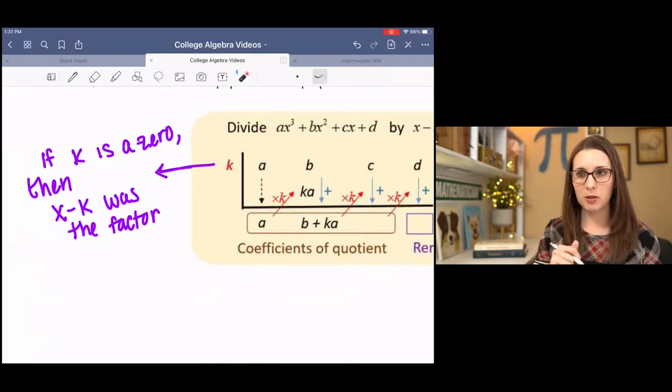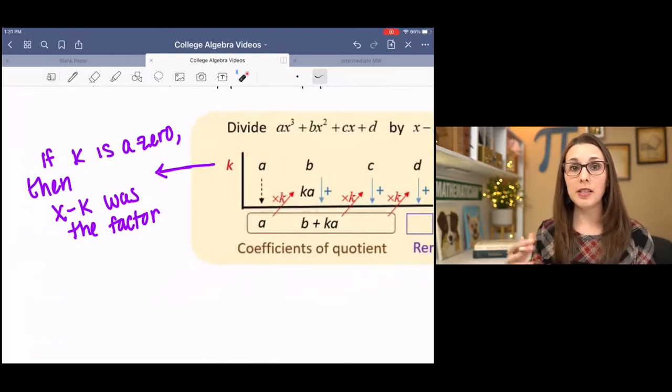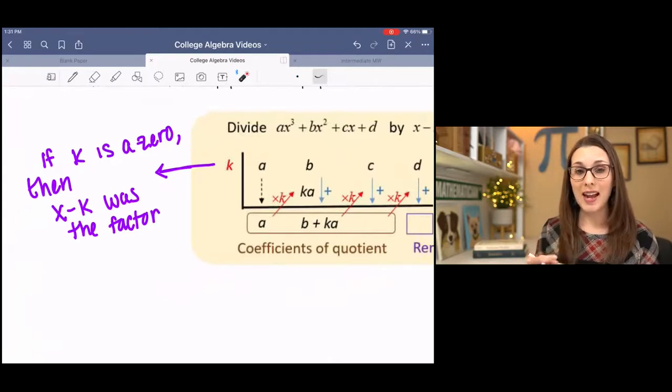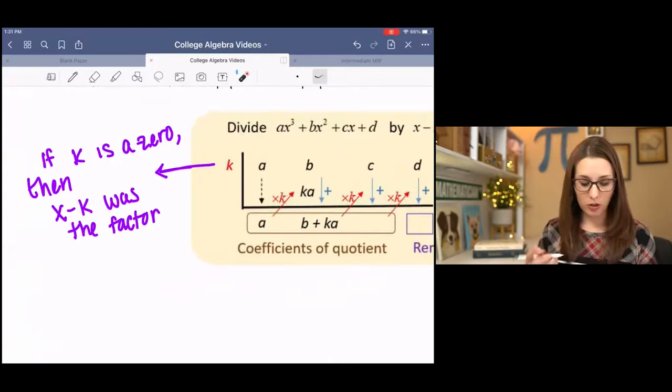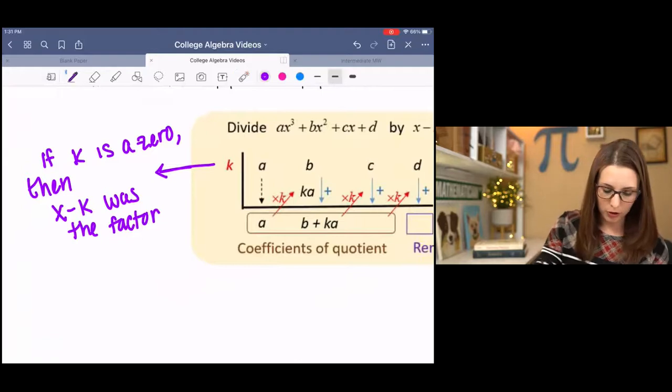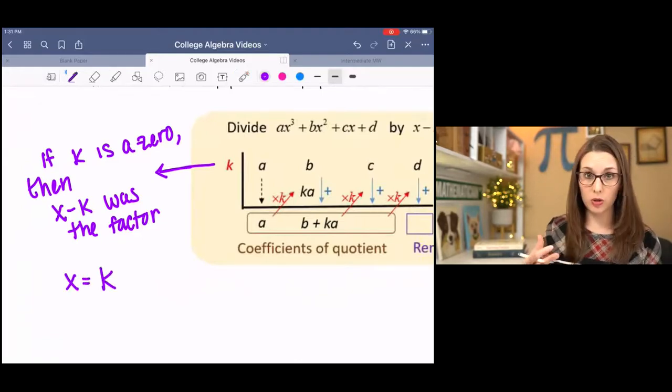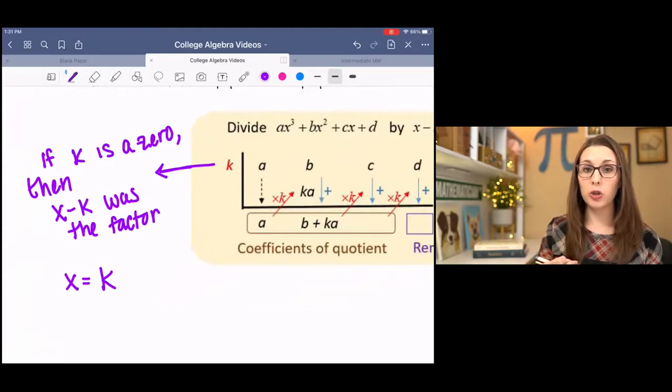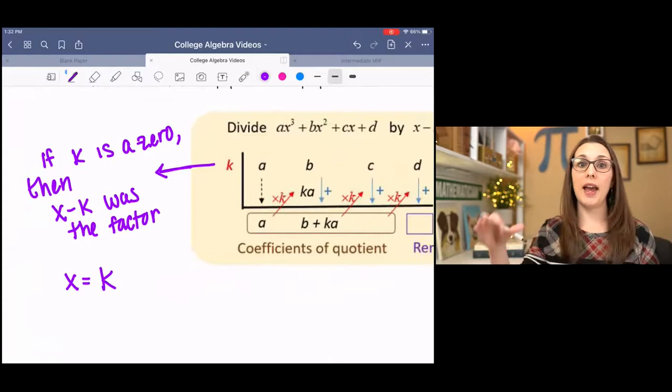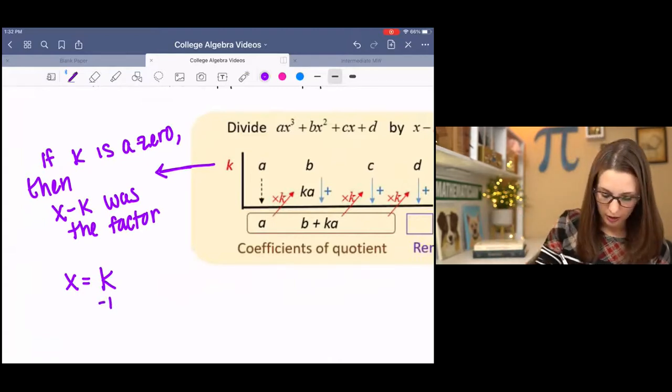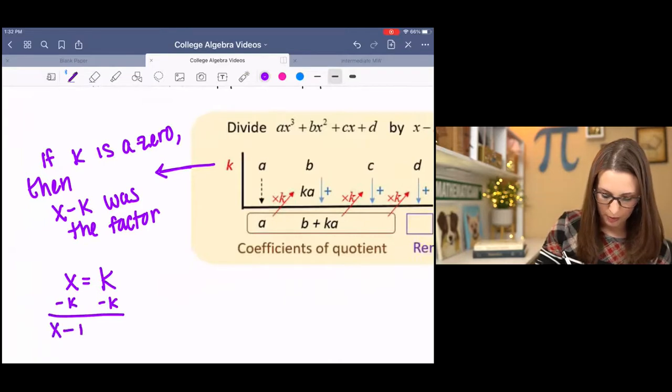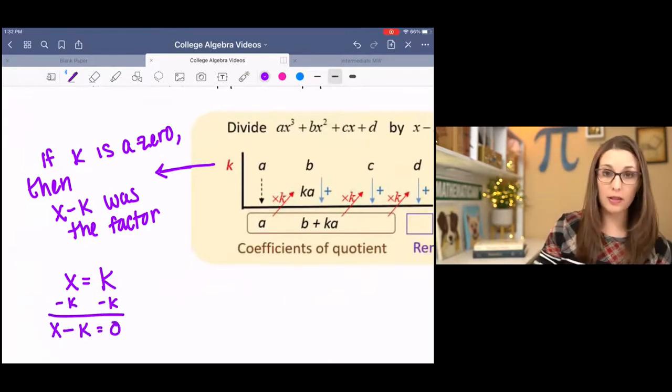is a zero or an x-intercept or a root, then x minus k was the factor. Because we started with k as the solution. So in order to have that solution, we had to have added k over to that side. If I work my way backwards, that would have been x minus k as the factor.